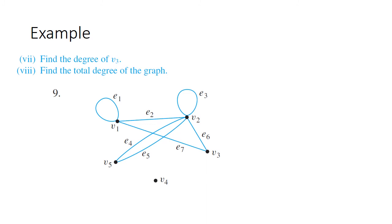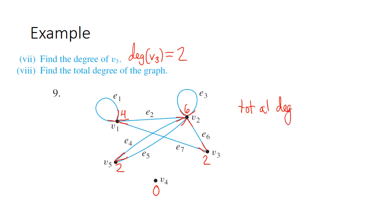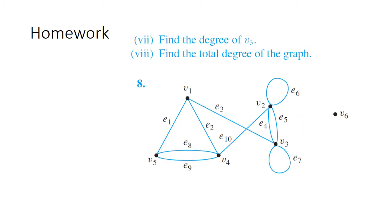Let's do parts seven and eight from problem nine using the same graph as before. The degree of V3 is two, since V3 has two connections to edges. For the total degree of the graph, going through all five vertices: one vertex has degree two, another has degree six, another has degree four, another has degree two, and the last has degree zero. So the total degree is 2+6+4+2+0 = 14. Try this on problem eight and check your answers in the back of the book.